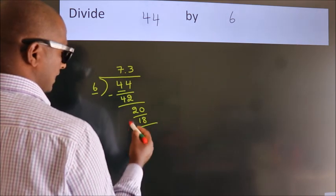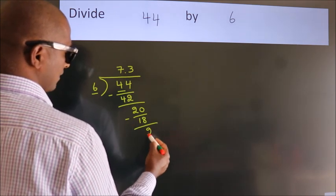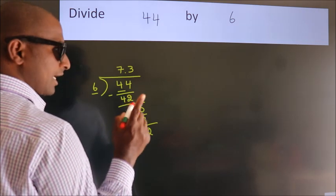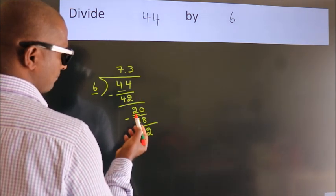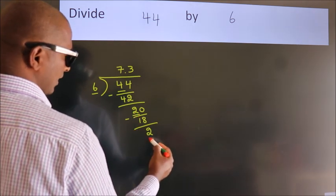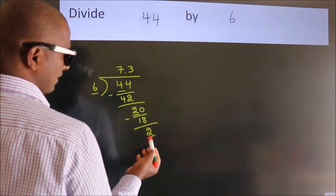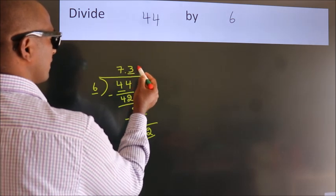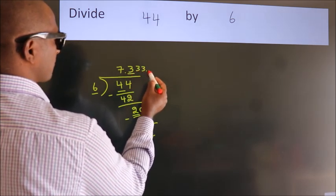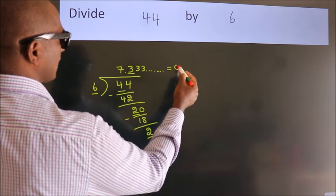Now we subtract. We get 2. Now you observe, we had 2 here and we got 2 again. That means this number keeps on repeating. So this is our quotient.